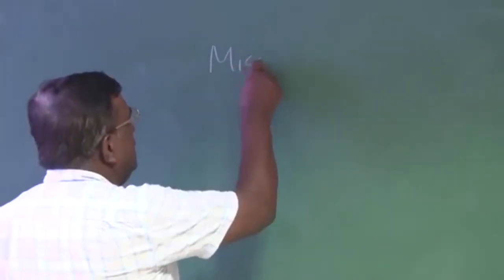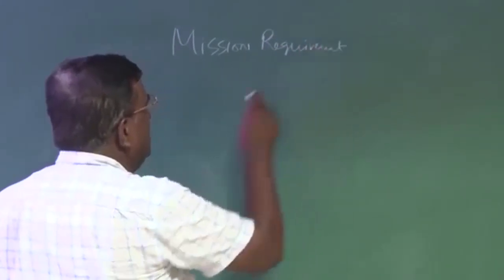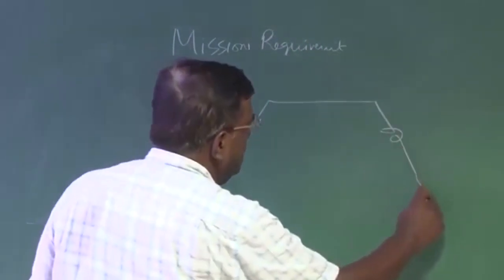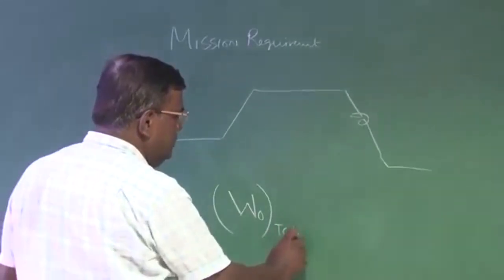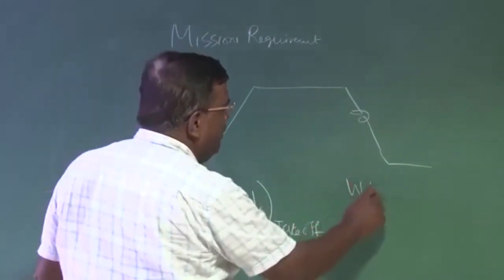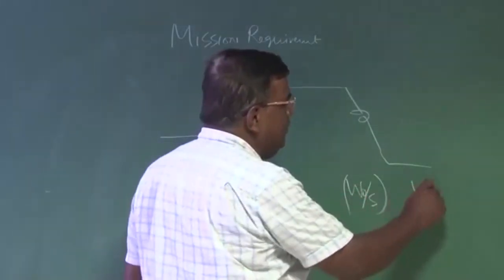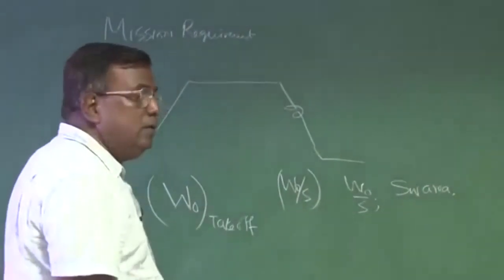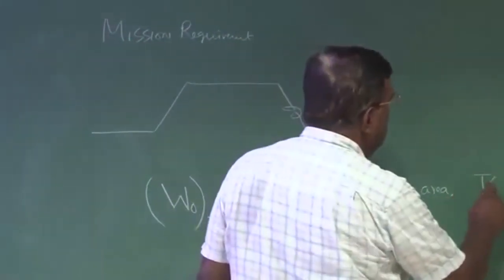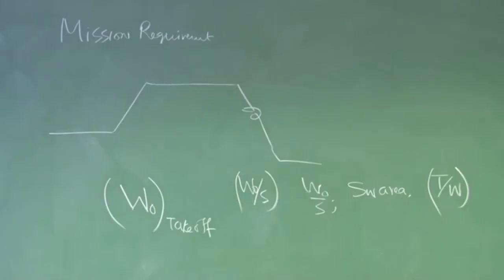The understanding was: I have a mission requirement, and from the mission requirement, we calculated W naught (takeoff weight). Then we tried to find out wing loading W naught by S. Once we selected W naught by S, we now know what the wing area is. We also got the idea about the T by W or thrust loading required for the conceptual airplane.